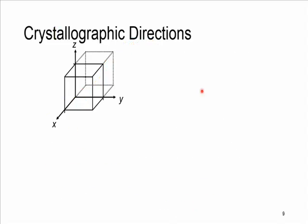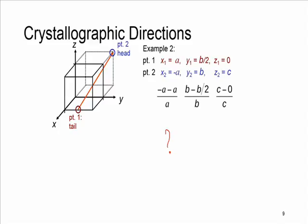Now let's find the crystallographic direction for the vector shown, which is connecting point 1 to point 2. Point 1 is the tail and point 2 is the head. We have the x, y, and z values for both. We will practice and solve this in the class, so I leave a question mark here and this is the initial part of the solution.